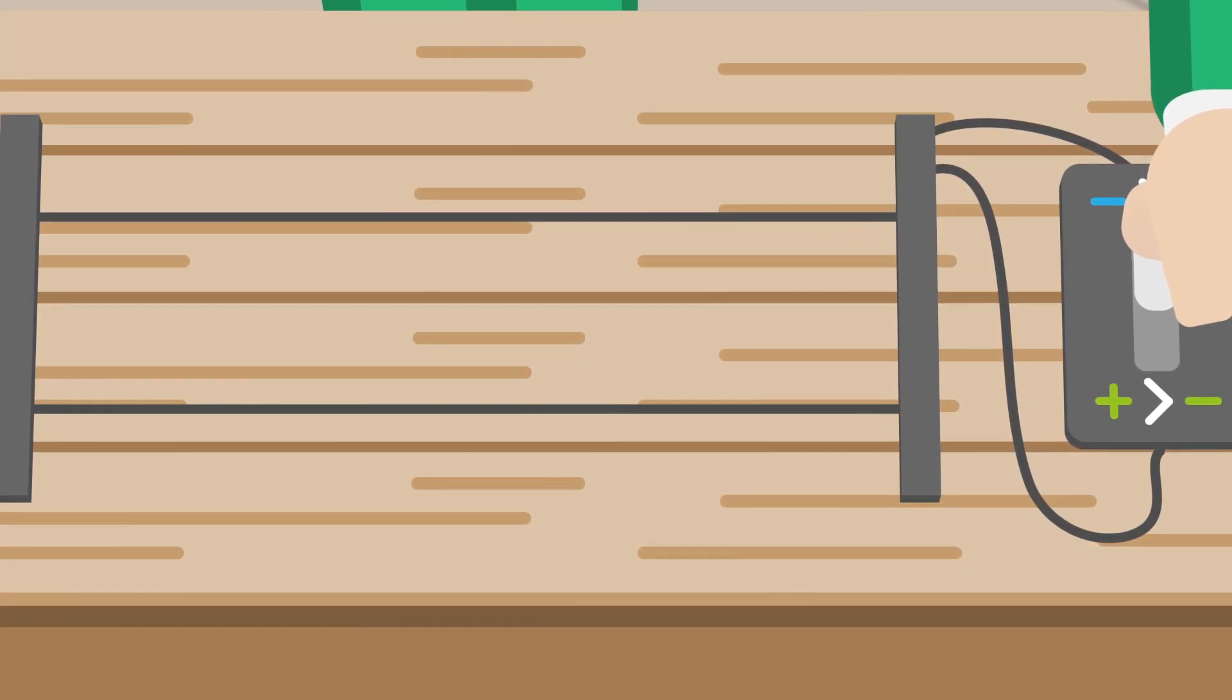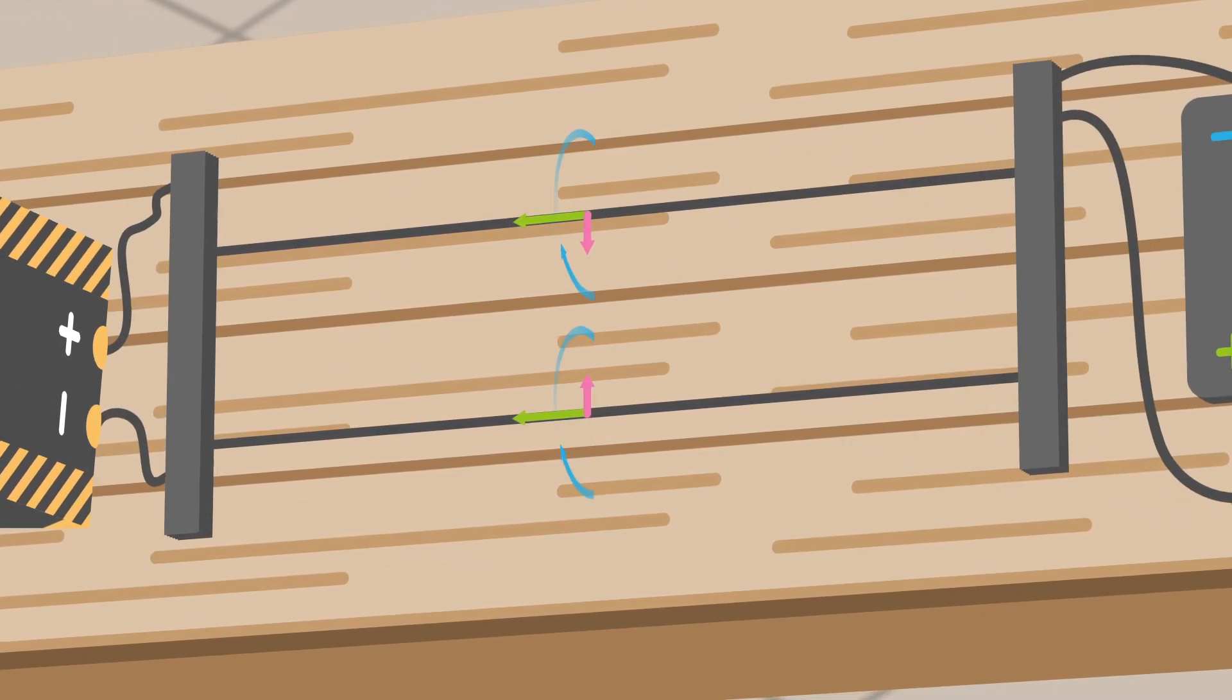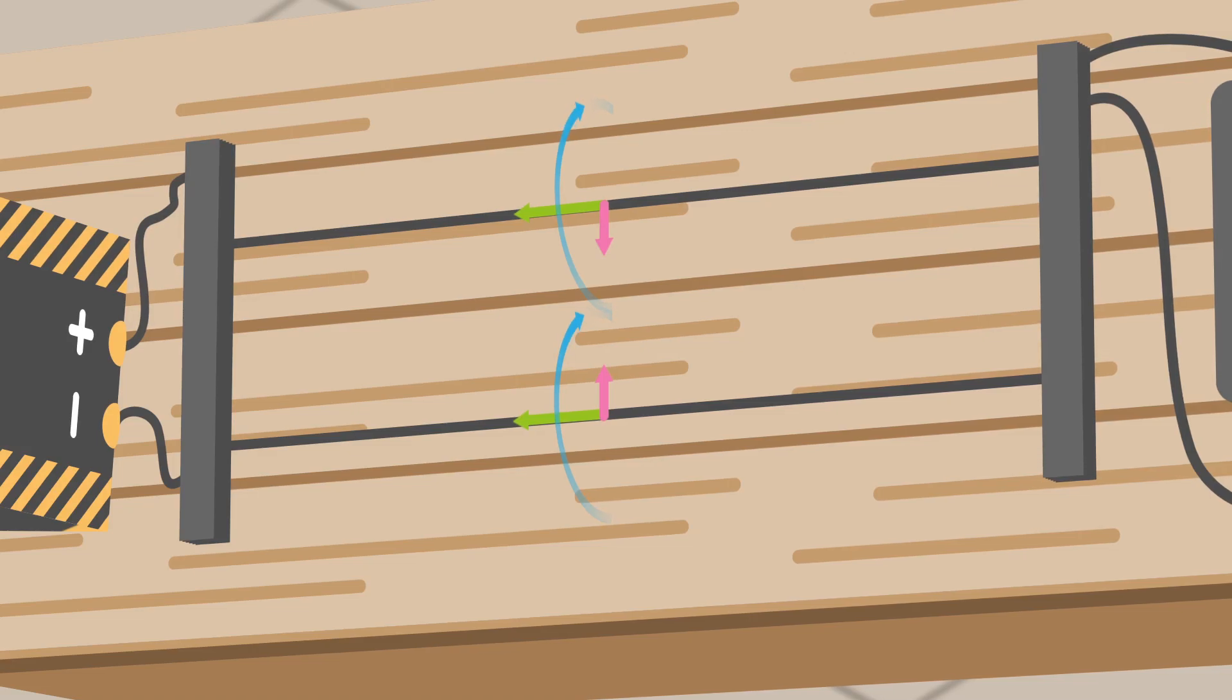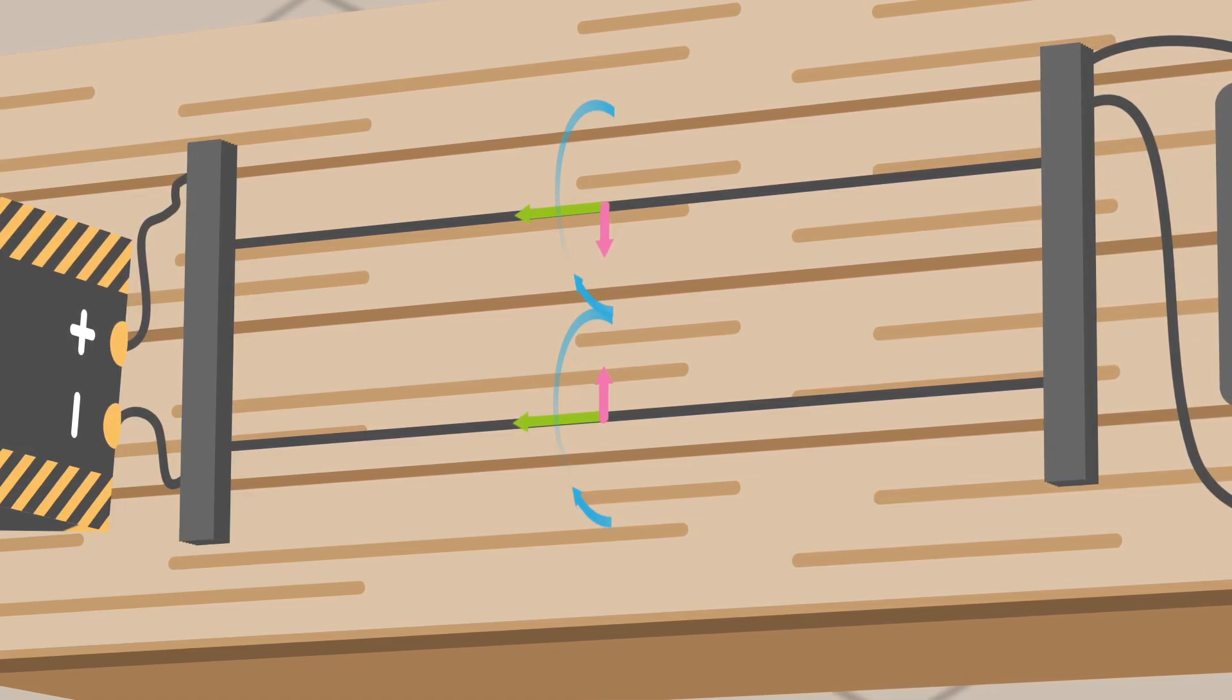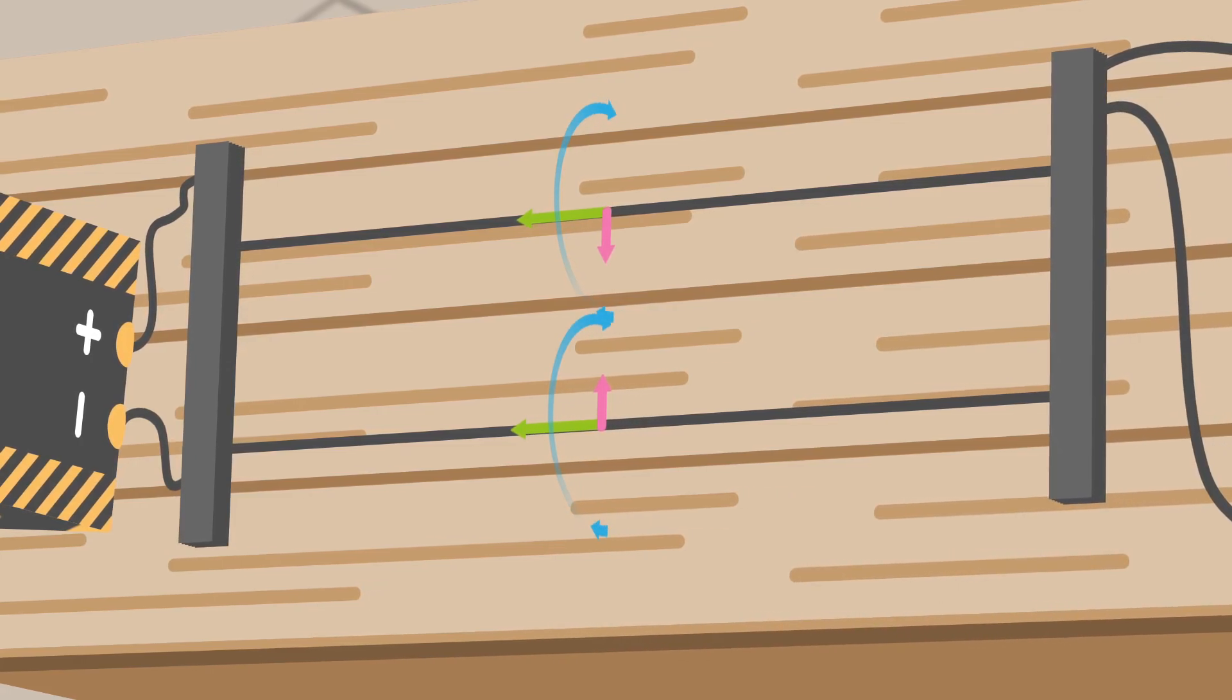Ampère derived a formula to calculate the forces between the current-carrying conductors. This force is proportional with the current value and inversely proportional with the square of the distance between the conductors.